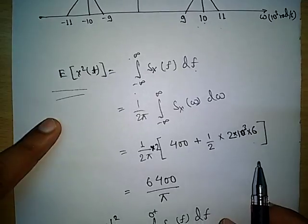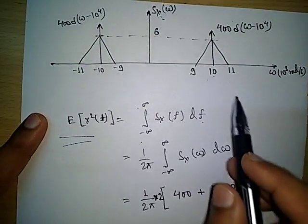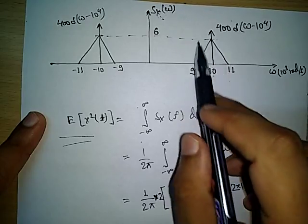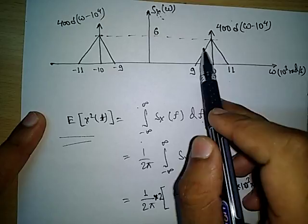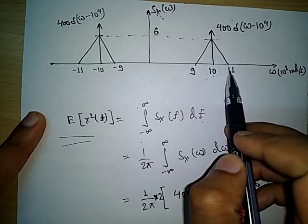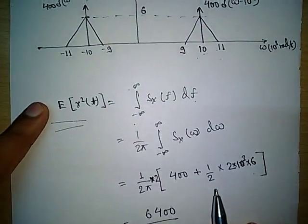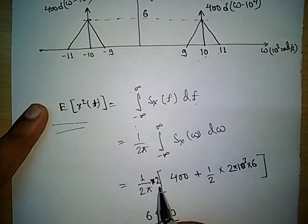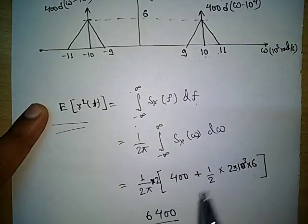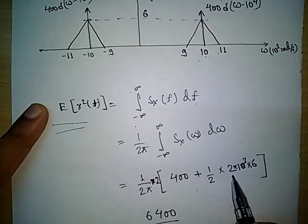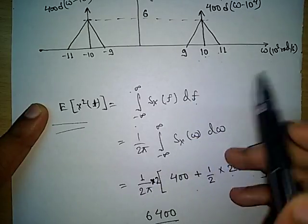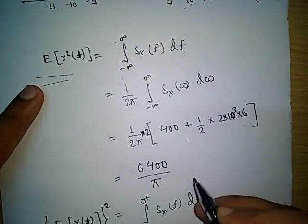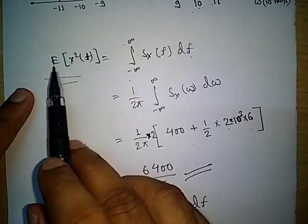The integration can be done easily from the graph. The delta function contributes a constant value of 400, and the triangular part gives an area we can compute easily. Using (1/2π), multiplied by 2 for both the positive and negative sides, we get: 2 × [400 (from the delta function) + area of triangle = ½ × 2×10³ × 6], where 2×10³ is the base in radians per second and 6 is the height. The final calculation gives E[x²(t)] = 6400/π.